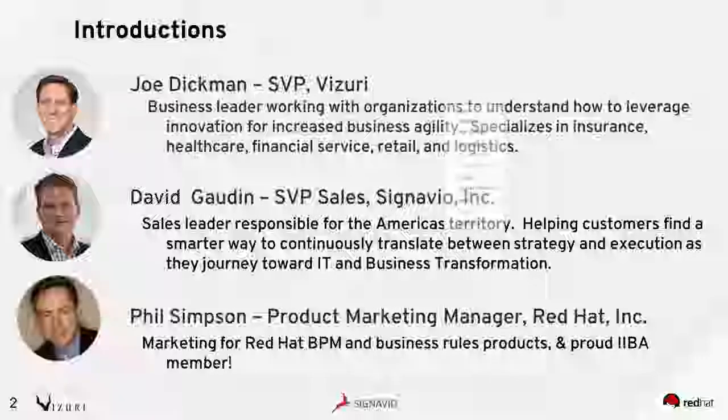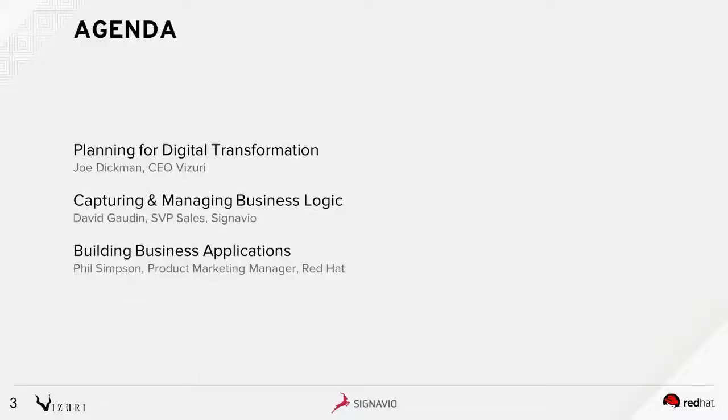We have a packed session today. We'll start out with Joe talking about planning for digital transformation — how do we get ready, and what are the things we need to be concerned about? Joe will hand over to David, who will cover capturing and managing business logic, business processes, and business rules. Then I'll wrap up with a discussion of how we go from models of our organization through to actual working applications.